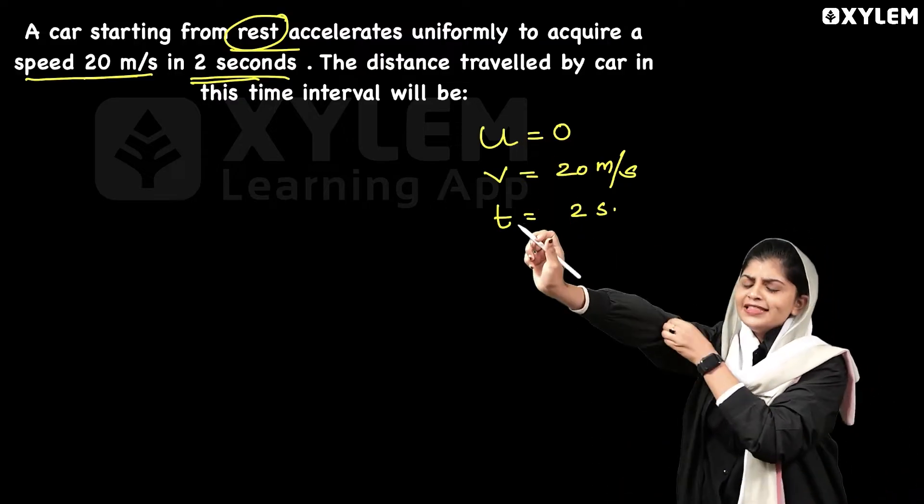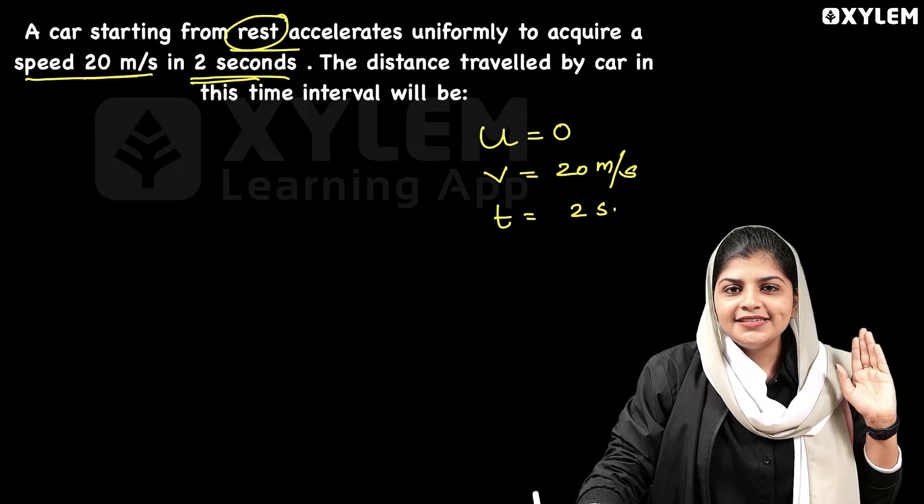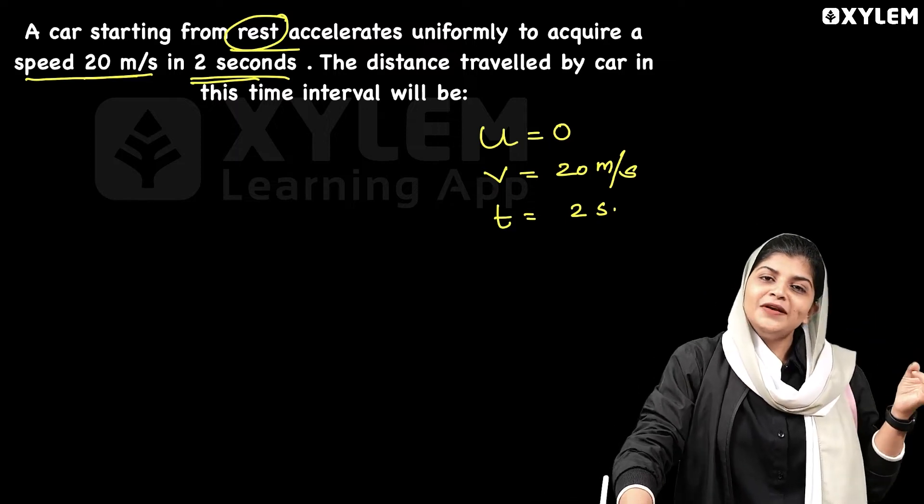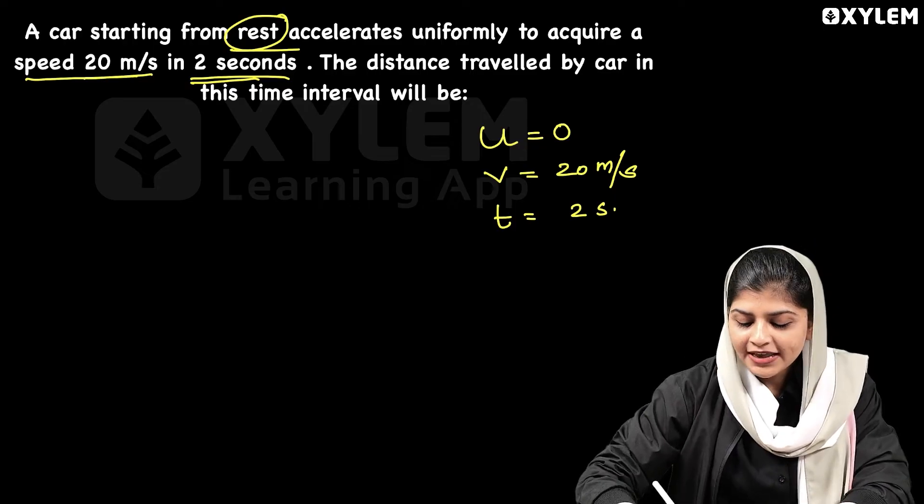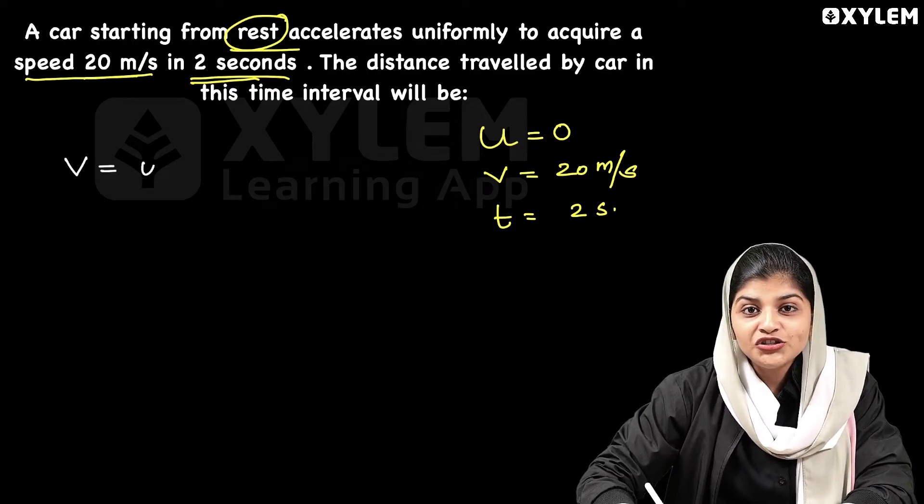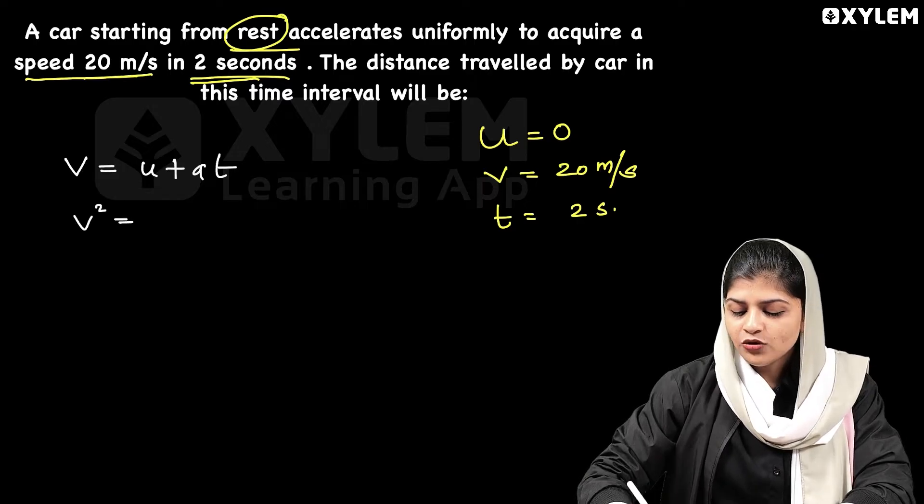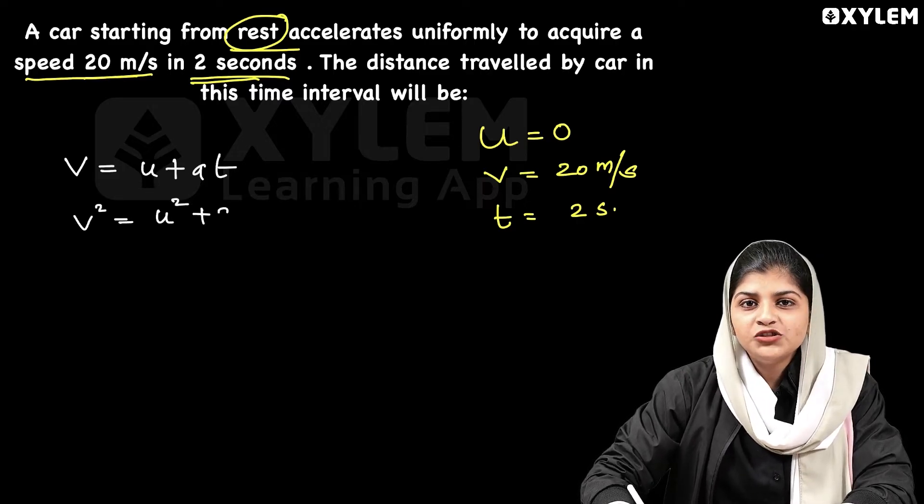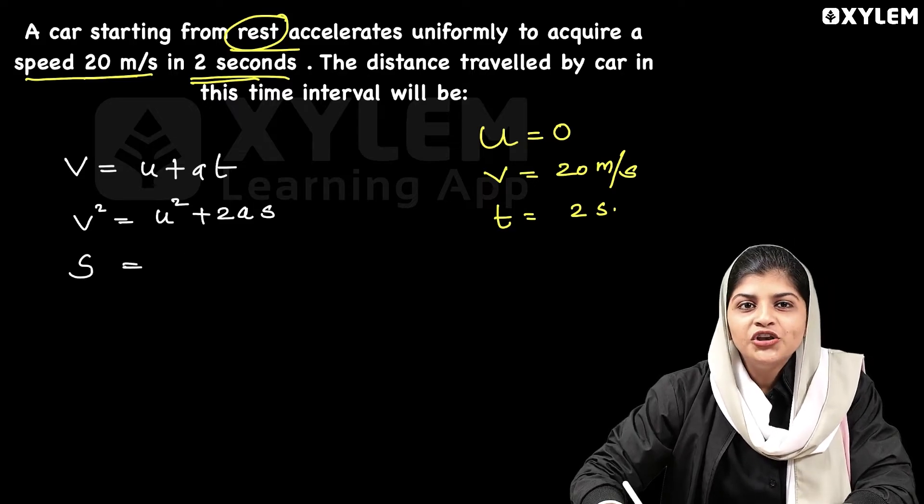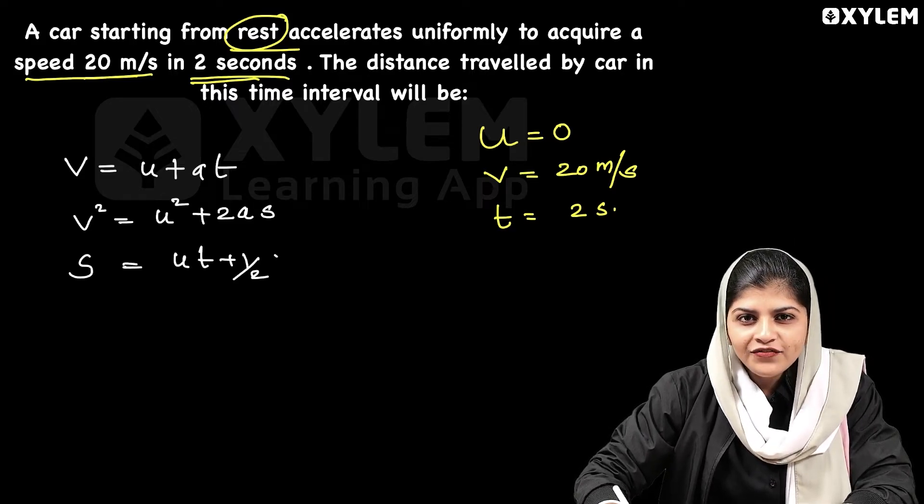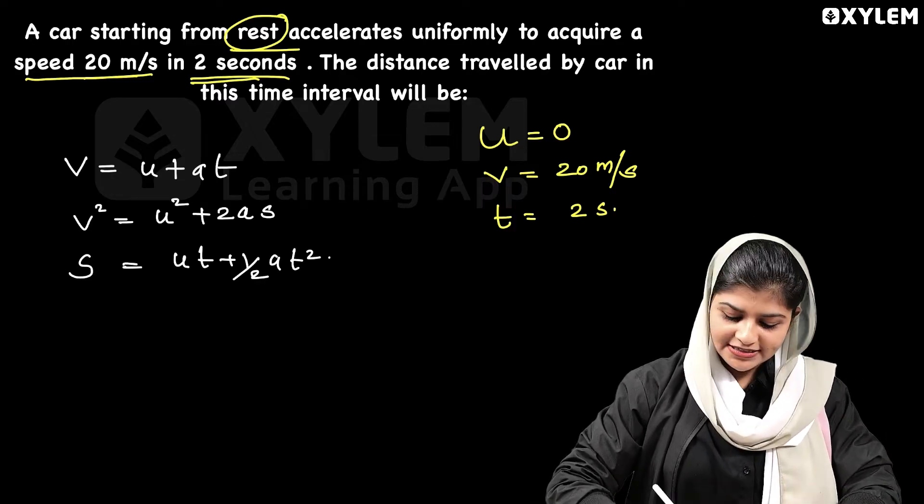What equations do we have? In our chapter, we have 3 equations. First: v is equal to u plus at. Then, v square is equal to u square plus 2as. Next one: s is equal to ut plus half at square. We have 3 equations in our chapter.